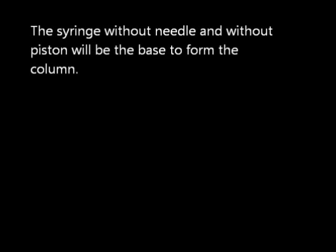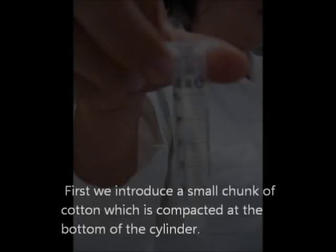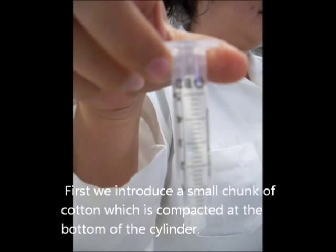The range width of needle and width of piston will be used to prepare the column. First we introduce a small chunk of cotton which is compacted at the bottom of the cylinder.